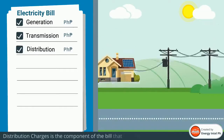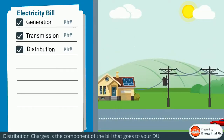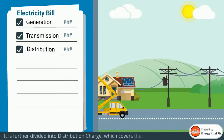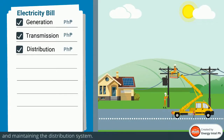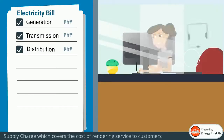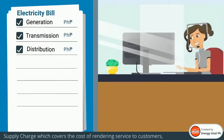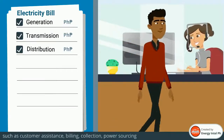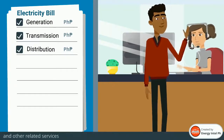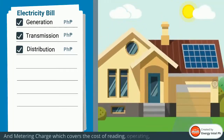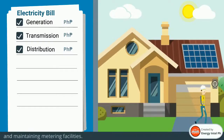Distribution charges is the component of the bill that goes to your distribution utility. It is further divided into: distribution charge, which covers the cost of operating and maintaining the distribution system; supply charge, which covers the cost of rendering service to customers such as customer assistance, billing, collection, power sourcing, and other related services; and metering charge, which covers the cost of reading, operating, and maintaining metering facilities.